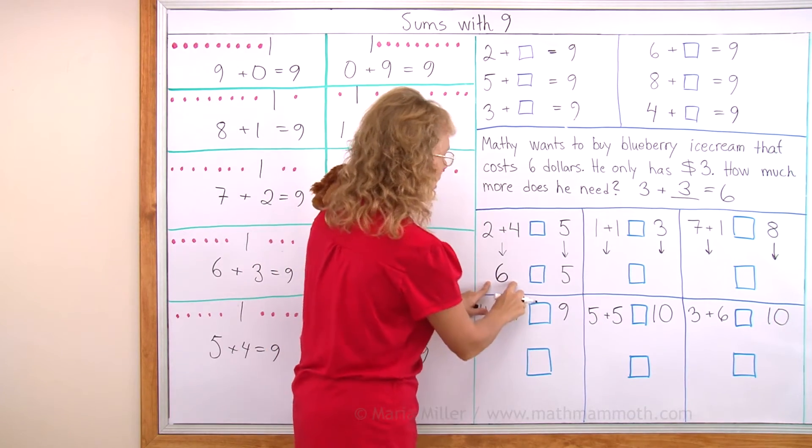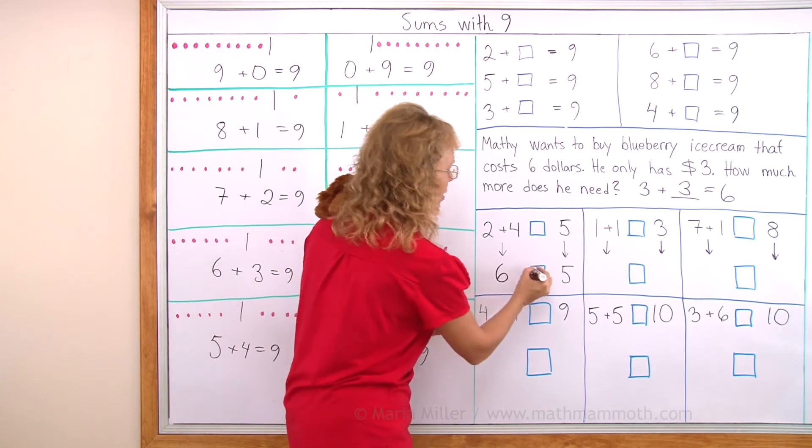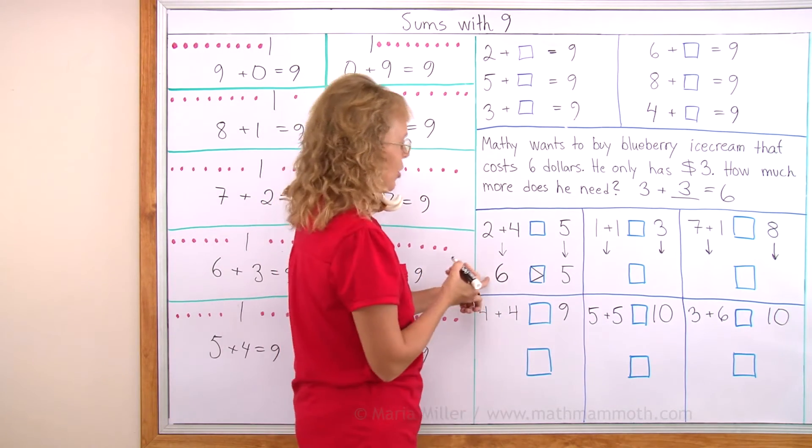So now we can just compare. There's 6 here on this side and 5 on that side. Which one is more? 6 is more. So the mouth has to open that way.